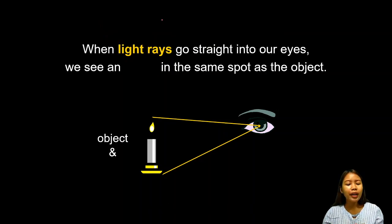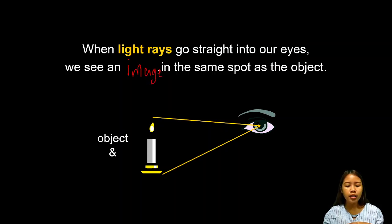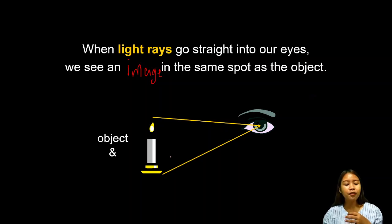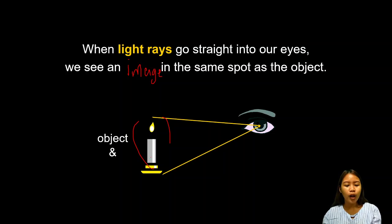When light rays go straight into our eyes, we see an image in the same spot as the object. So whatever distance the candle is from you, the image you perceive is at that same distance. Therefore, the candle considered as an object — once you perceive it — is also considered as an image.